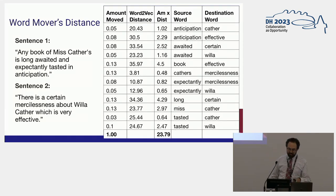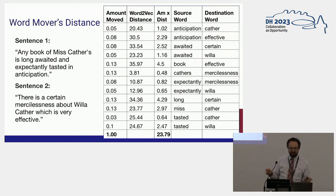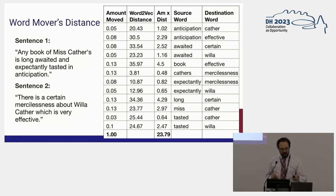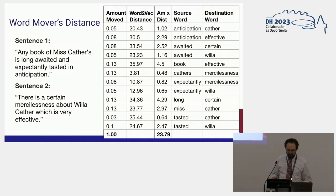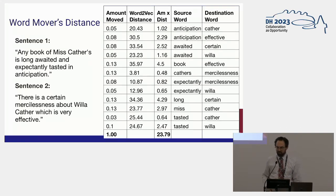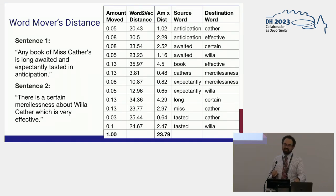In reality this is much more complicated than that example. You're looking at the relative frequency of words, so we have to figure out how to move, say, 0.13 of the word anticipation to destinations in the second document — moving 0.05 of it to the word Cather and 0.08 to the word effective. As documents get longer, this list of moves gets much longer and itself becomes an object you have to analyze.